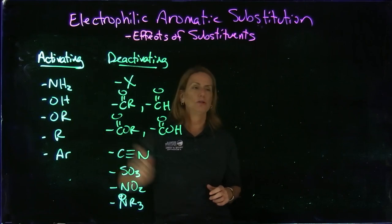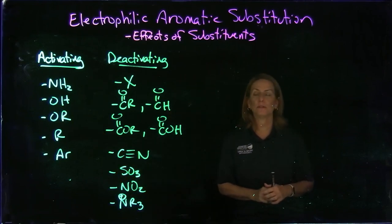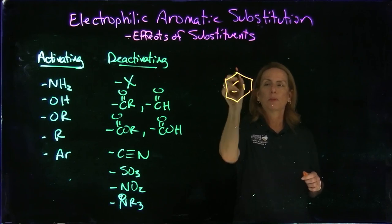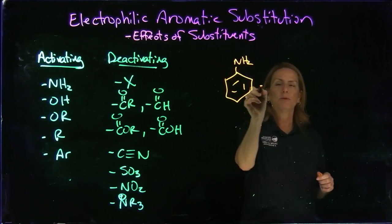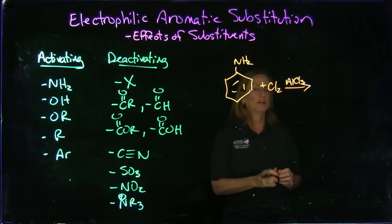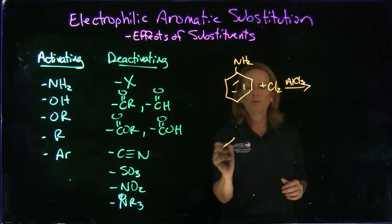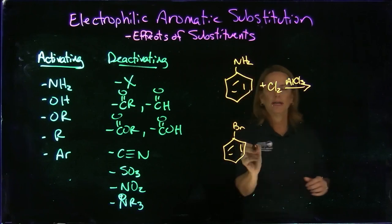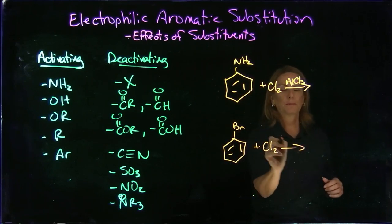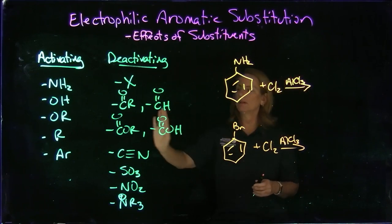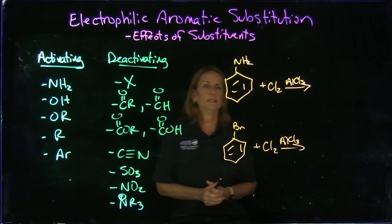So for example, if we have an NH2 that would be aniline, that would react faster. So let's draw an example. Here's aniline, and I'm going to do a chlorination. This reaction would go faster than one that has less electron density. Let's look at X. We'll just put a bromine right there. And if we did this reaction,